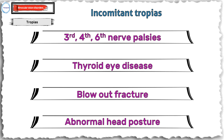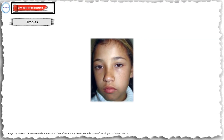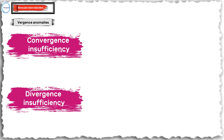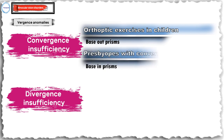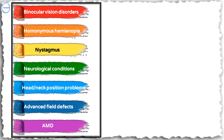Yoked prisms may sometimes be used in incomitant strabismus with an abnormal head posture. Coming to vergence anomalies: base-out prisms to force fusional convergence may be used in orthoptic exercises in children, and base-in prisms to relieve the asthenopia due to convergence insufficiency that manifests in early presbyopes. Base-out prisms may be used in divergence insufficiency if exercises are ineffective or not possible.